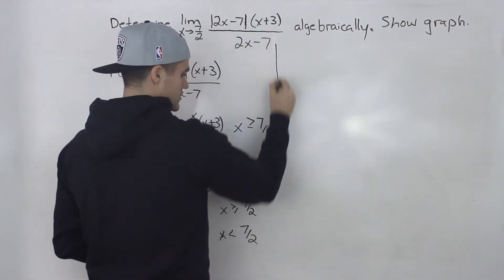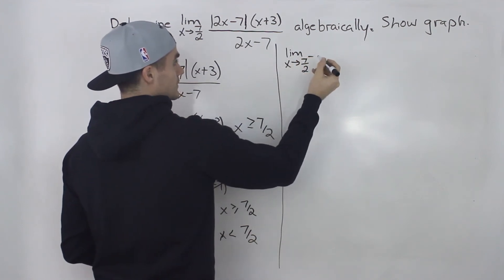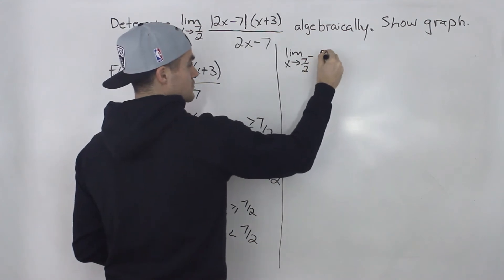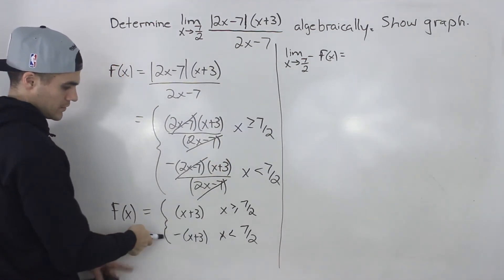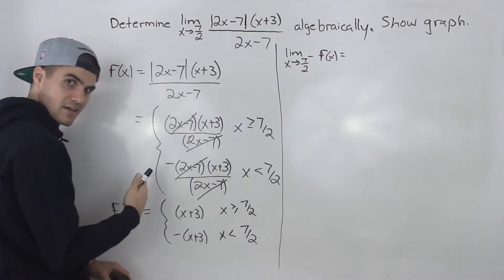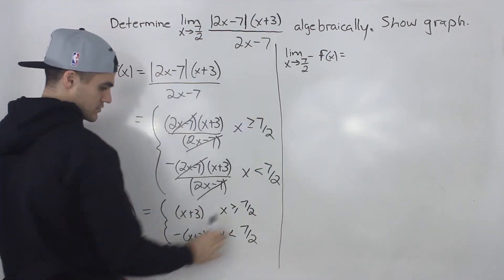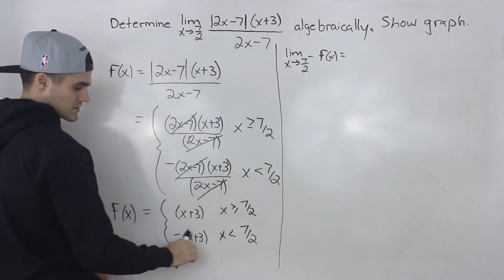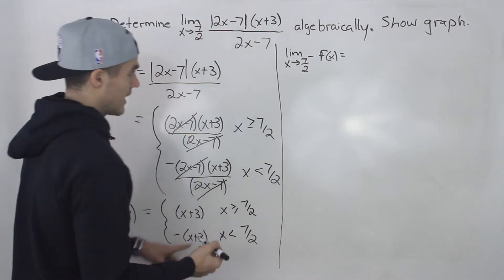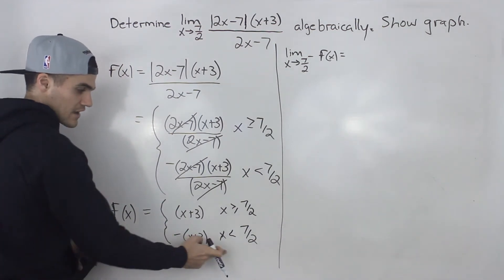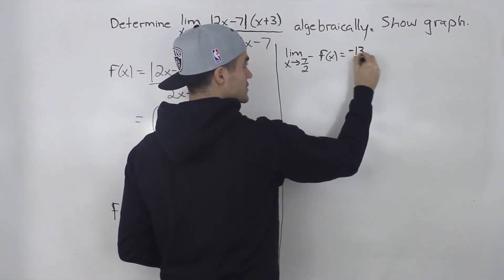We need to find the limit as x approaches 7 over 2 from the negative side. Approaching from the left, the function is defined by negative (x plus 3). Plugging in 7 over 2: 3.5 plus 3 gives 6.5, and the negative in front makes it negative. So the left-sided limit equals negative 6.5, or negative 13 over 2.